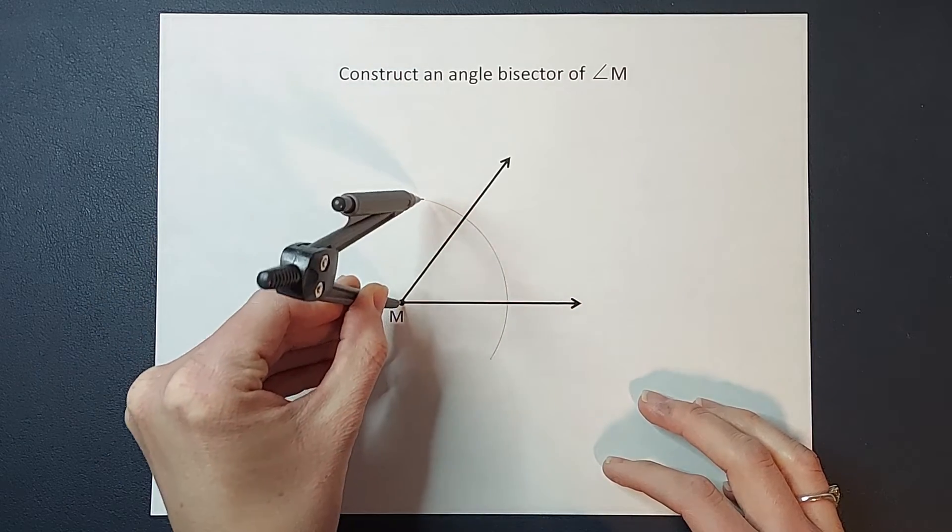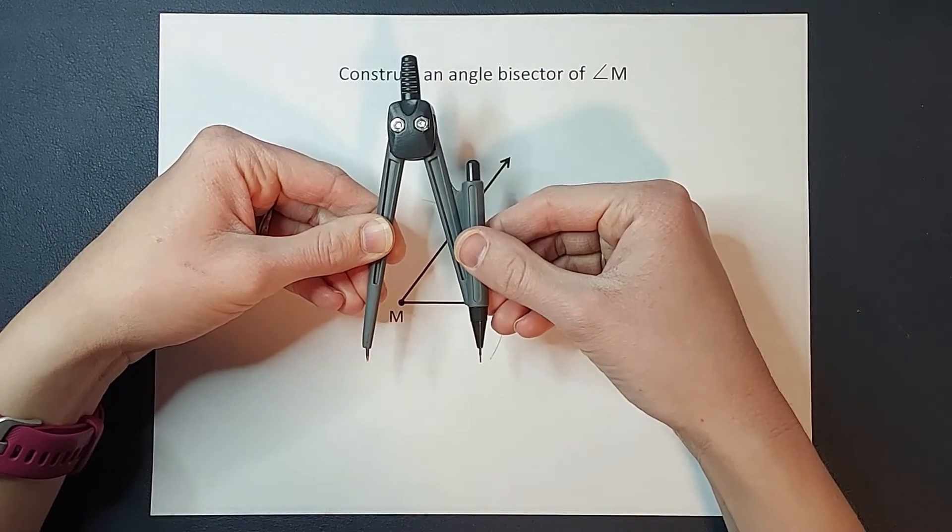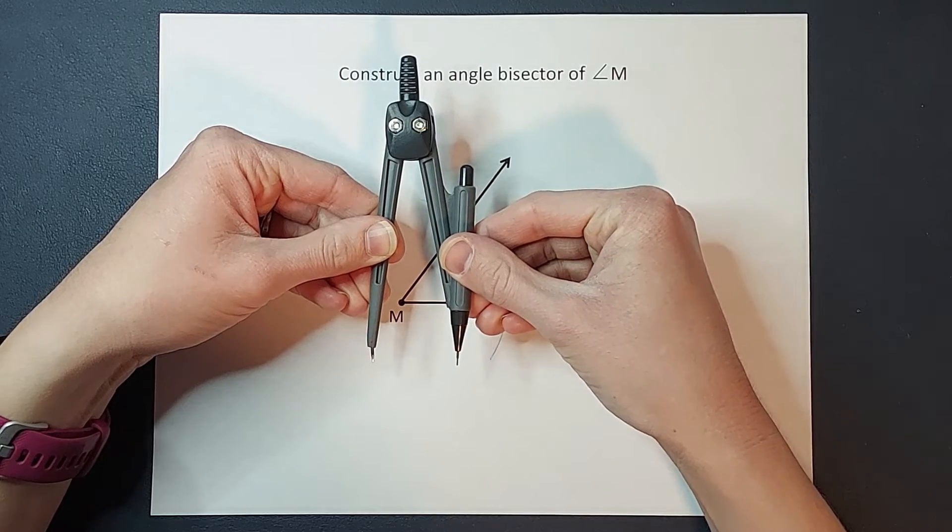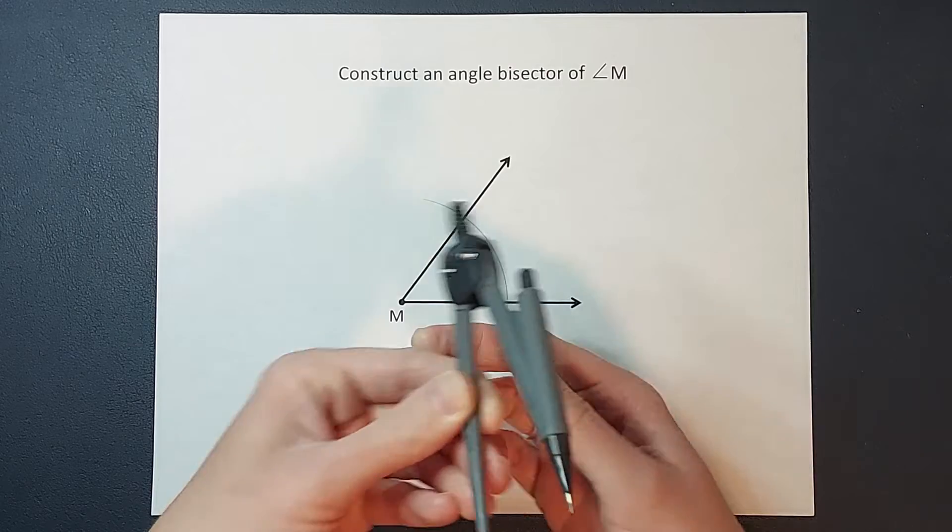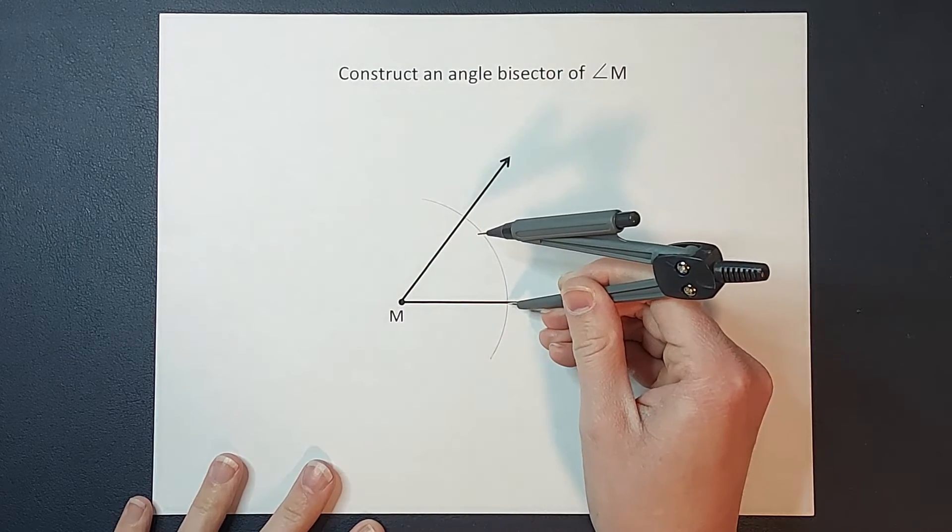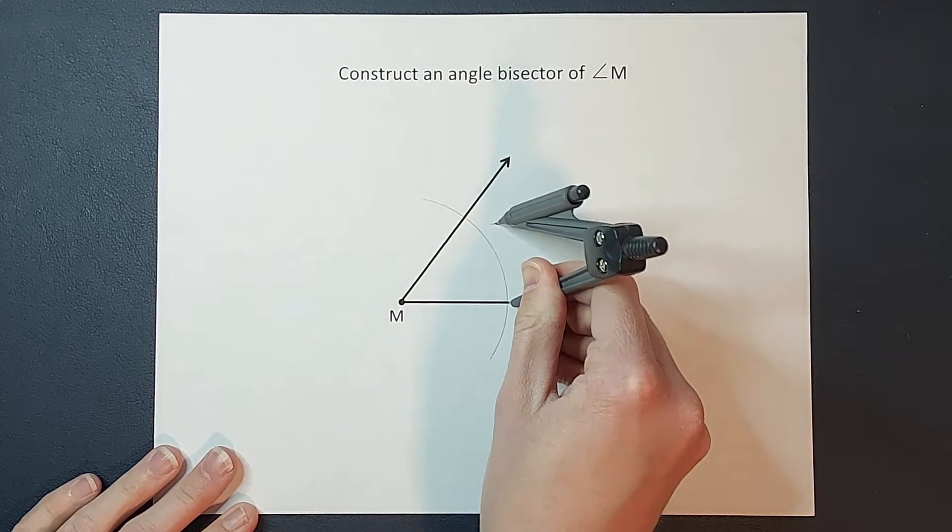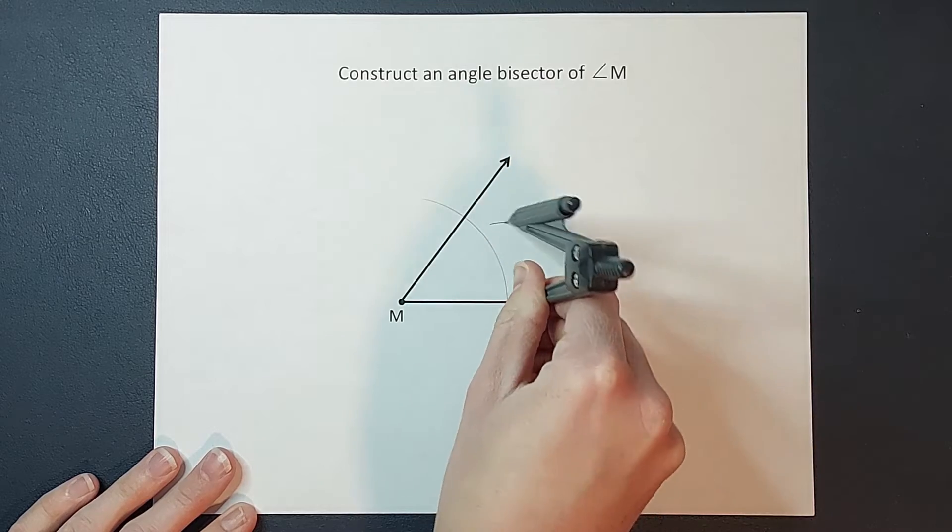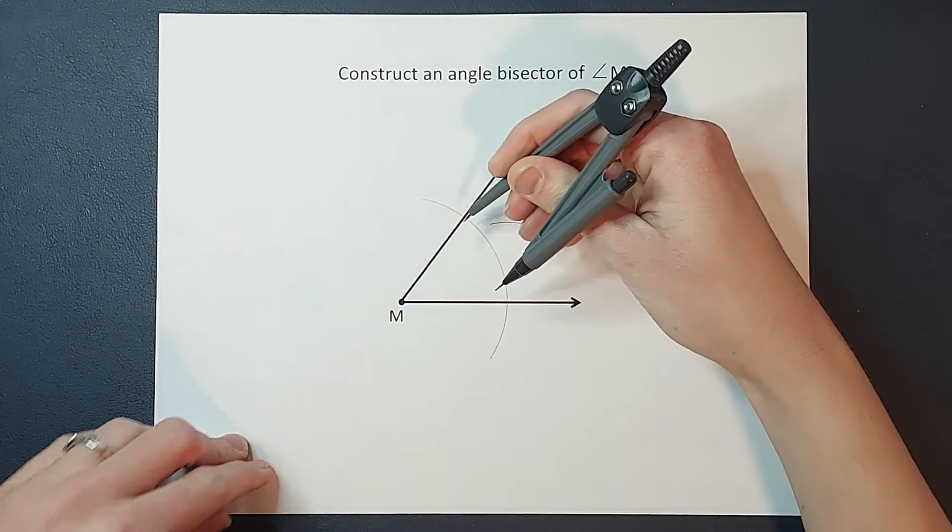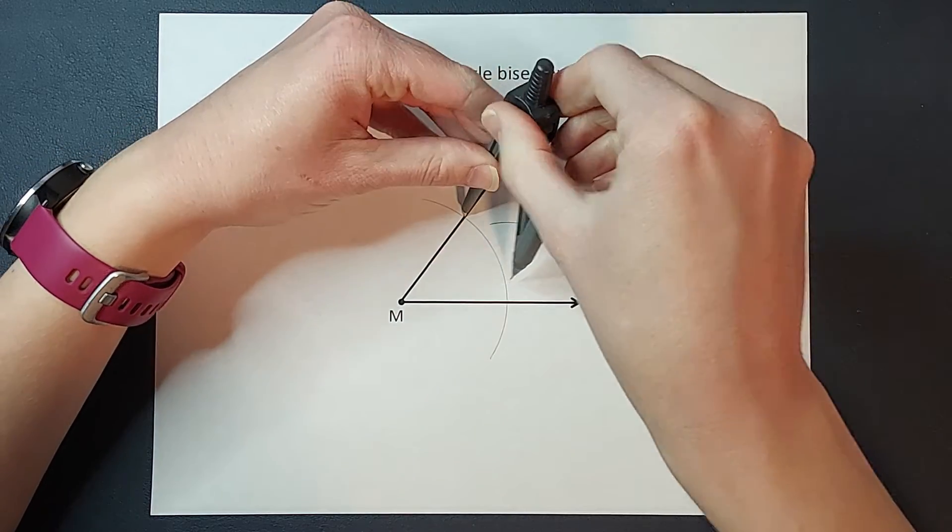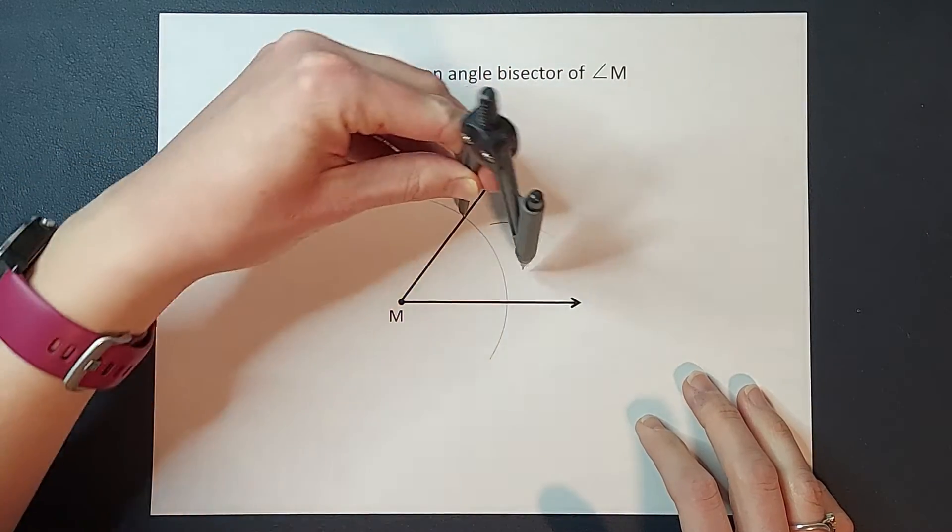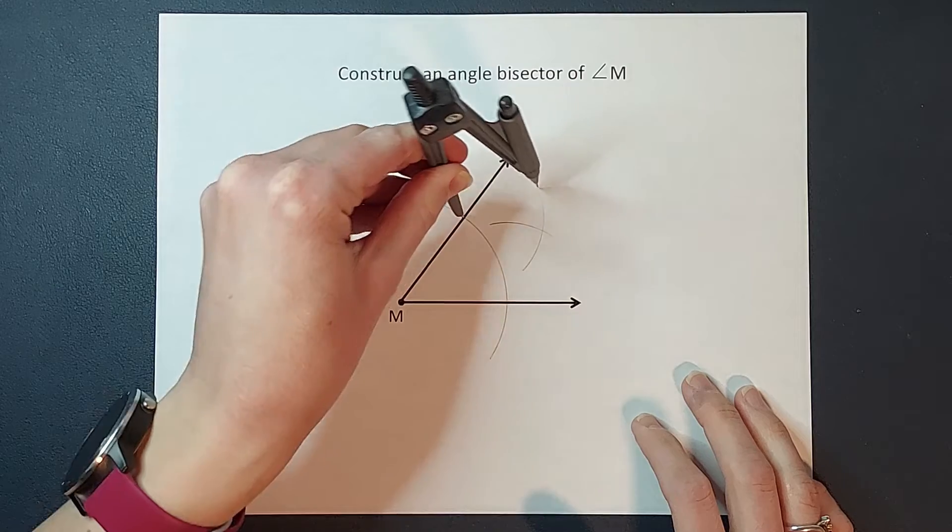Now what you're going to do is make your compass just slightly smaller than it was for this arc, and then we are going to set our point on this intersection and make another arc, and again on this intersection and make another arc. And would you look at that?